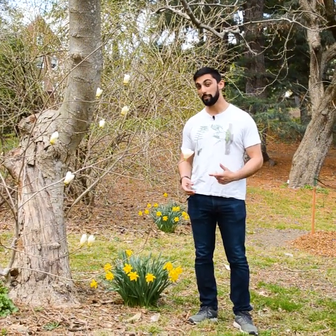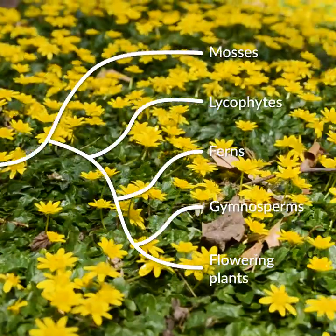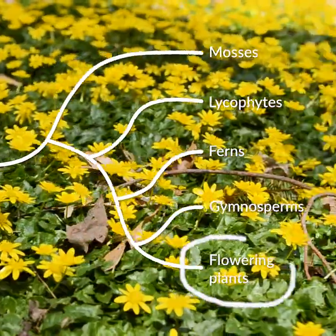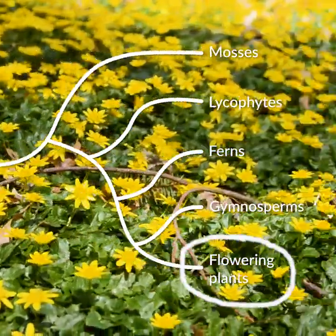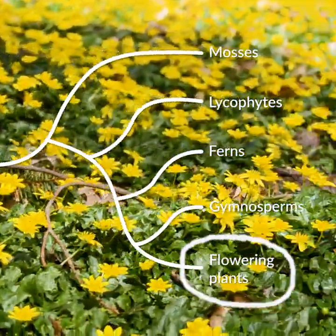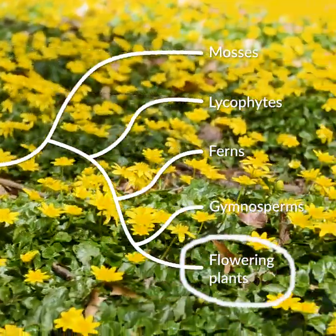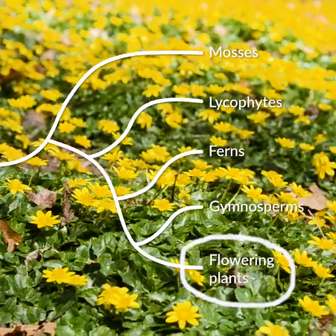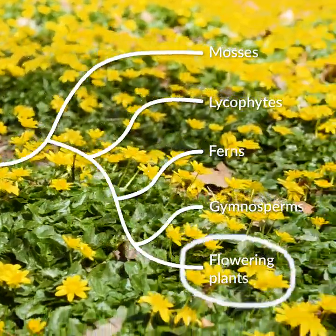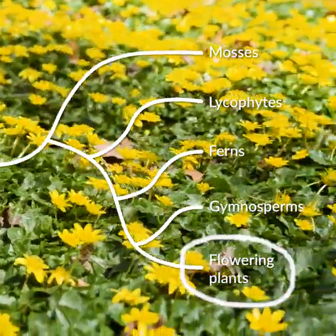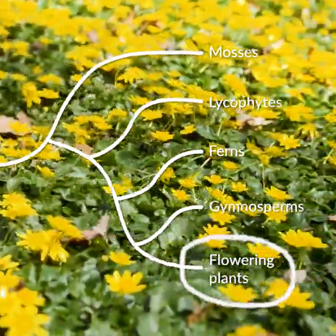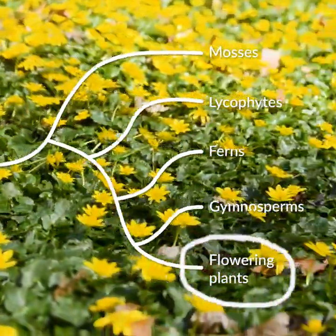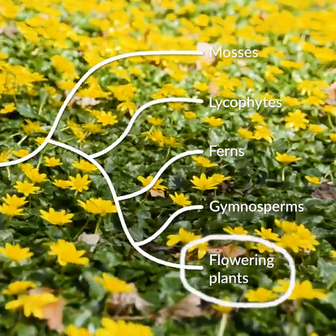So you've heard us say something like this before, but angiosperms, or flowering plants, are one of the five major lineages of land plants. In fact, of the five major lineages, it's the flowering plants that are by far the most diverse.